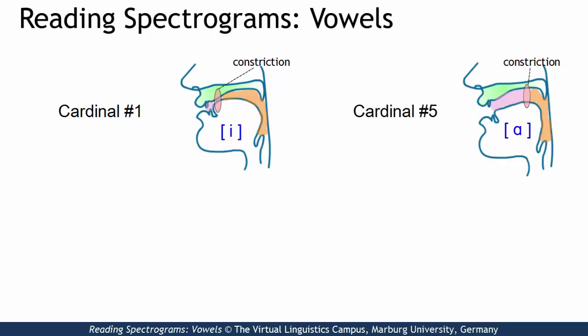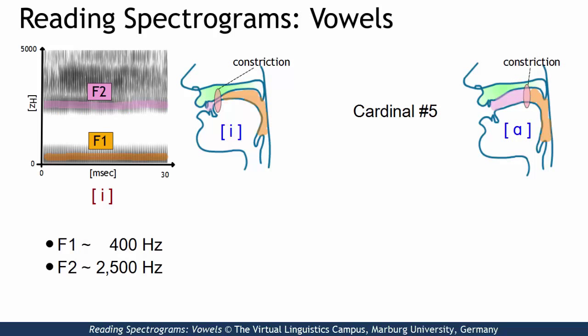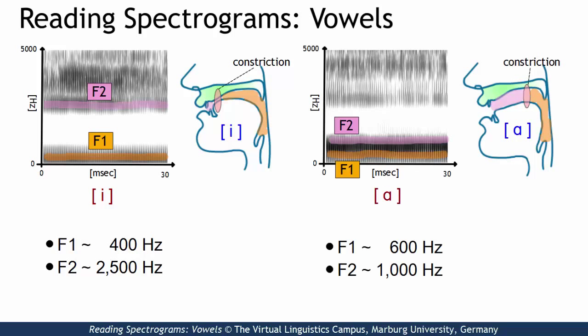And now look at their spectrograms. Cardinal vowel number 1 is characterized by a low F1 value at around 400 Hz and a very high F2 value at around 2500 Hz, whereas cardinal vowel number 5 has a slightly higher F1 value at around 600 Hz and a much lower F2 value of around 1000 Hz.